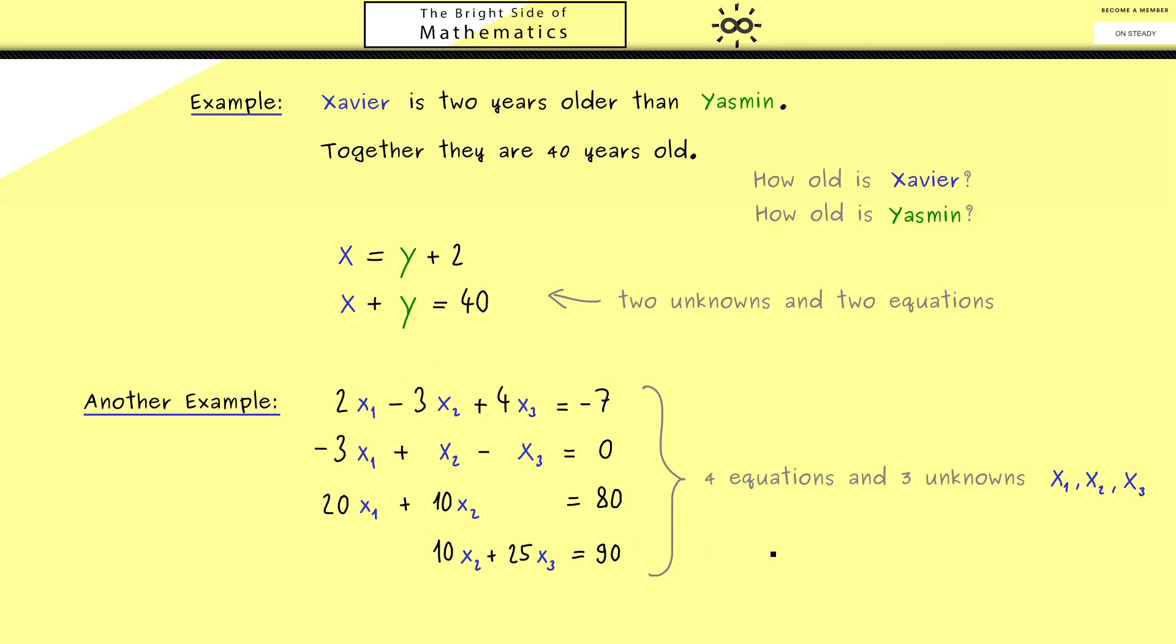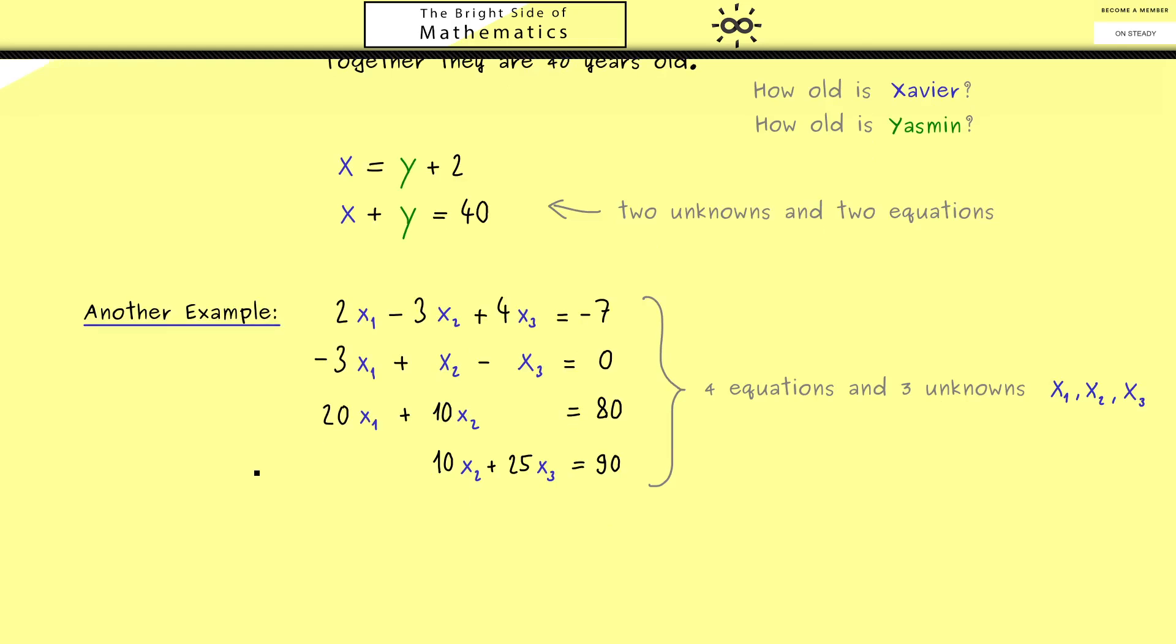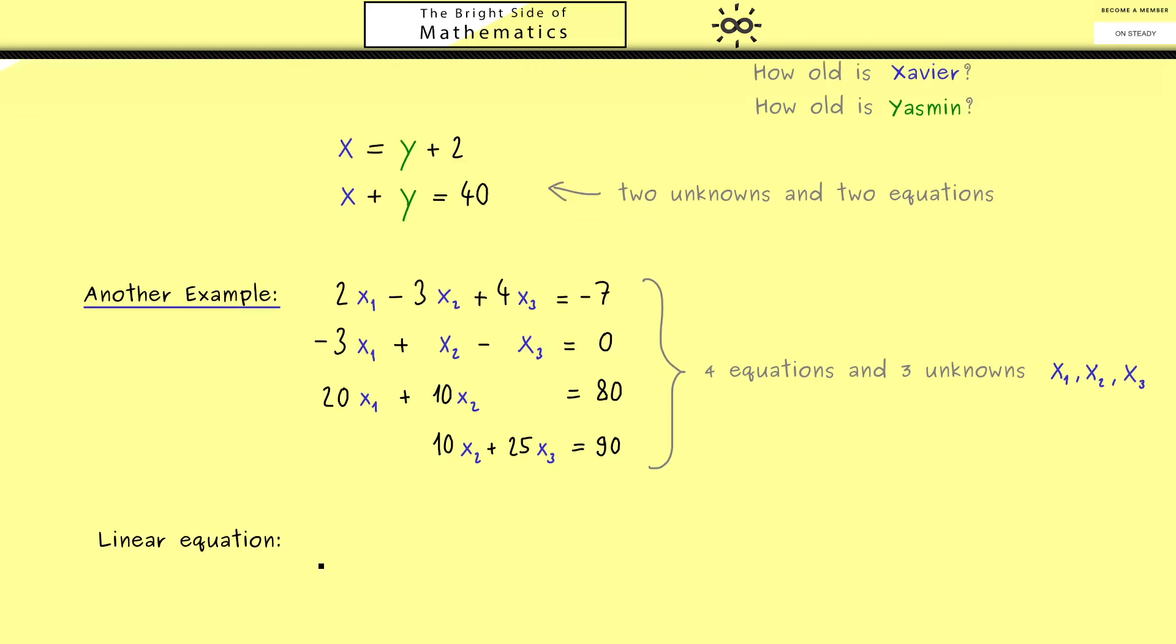Indeed here we can ask the same question. Are there some values for the unknowns such that all equations are satisfied? And again these values we would call a solution for the system. However for us here the most important fact is that all these equations here are so called linear equations. Of course the term linear makes sense when we do linear algebra but what does it mean for equations?